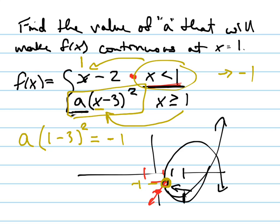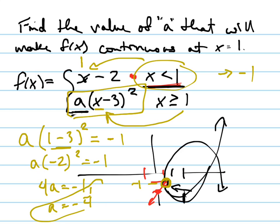And now I solve it. Negative 2 squared: so I've got A times negative 2 squared equals negative 1. That means 4a equals negative 1, which means a equals negative 1 fourth. And when I plug negative 1 fourth in, it's going to be opening down, doing like this. And that's my graph.